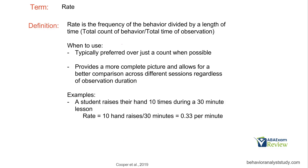That's where rate comes in. Rate is a more advanced way to think about the occurrence of behavior. We're taking that frequency but now adding a time component. We're taking the total count of behavior — let's say 10 — dividing it by total time of observation, let's say one hour. So our rate would be 10 times per hour. Instead of just having 10, we now have context as far as time goes. It's typically preferred over just a count when possible — it gives you more information and allows for better comparisons across different sessions.